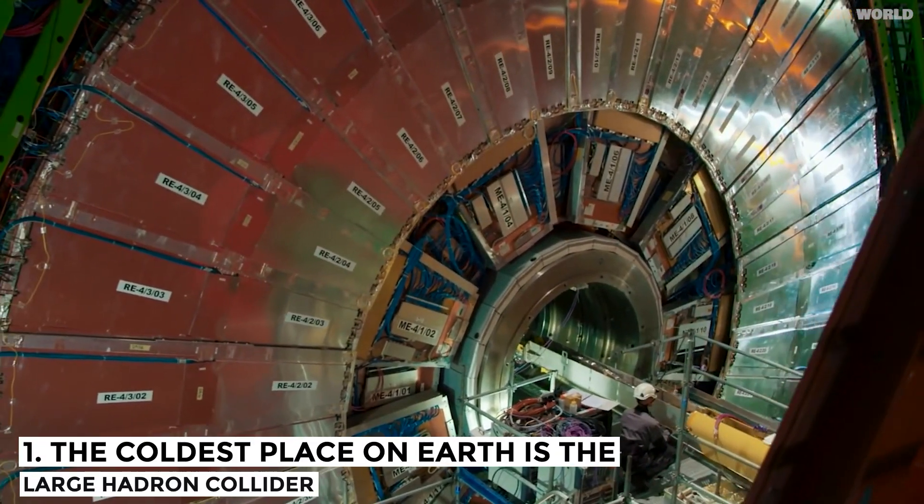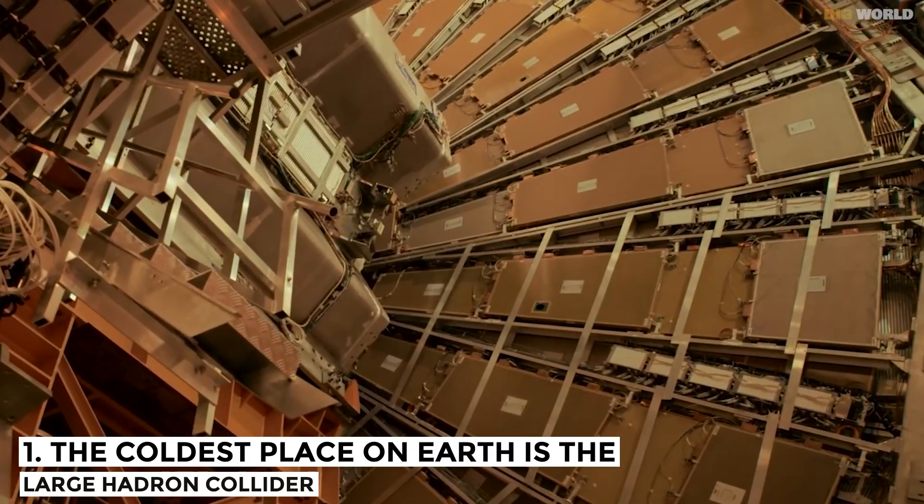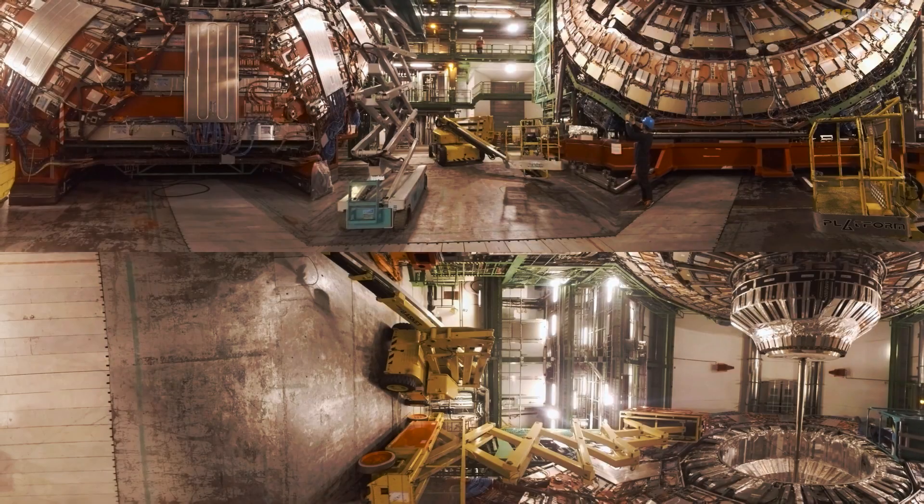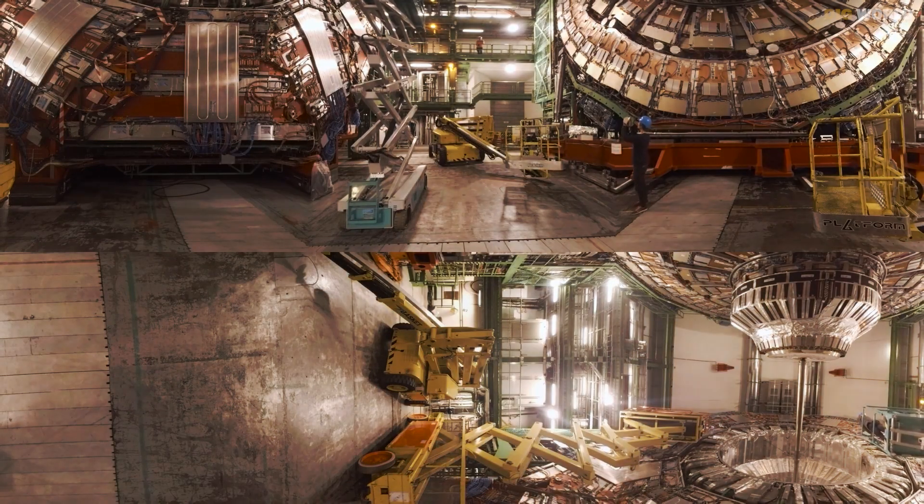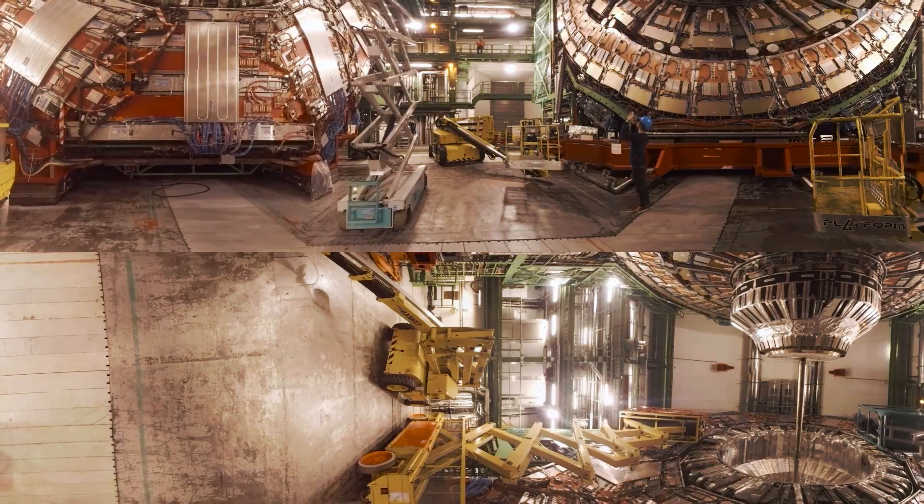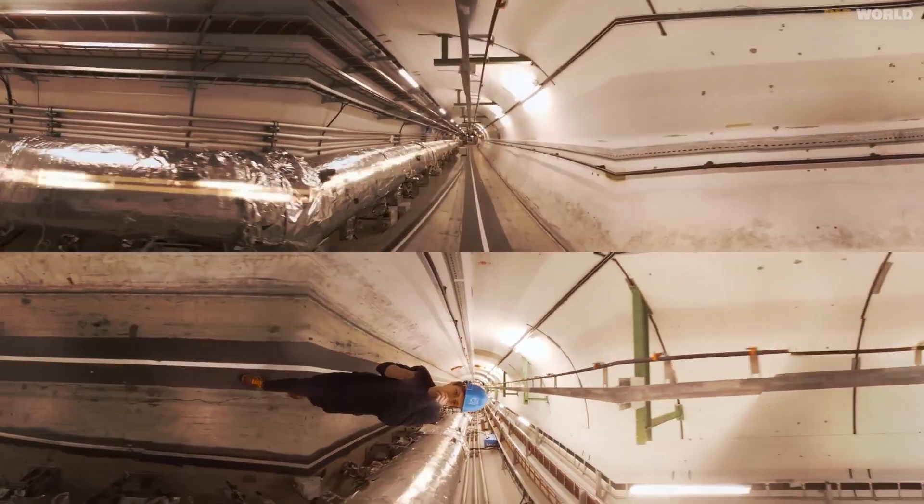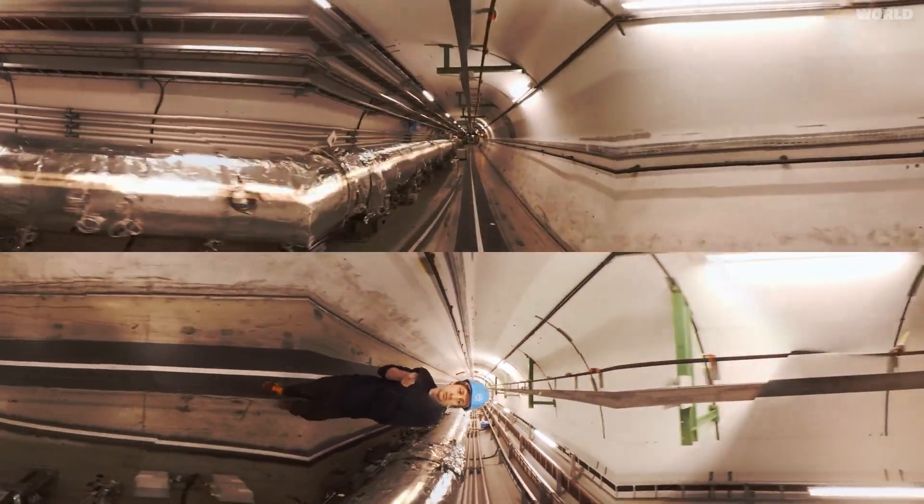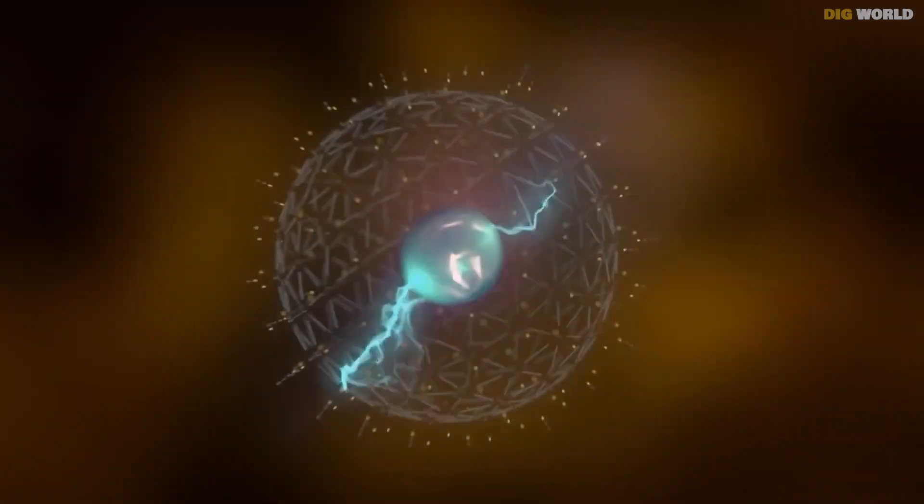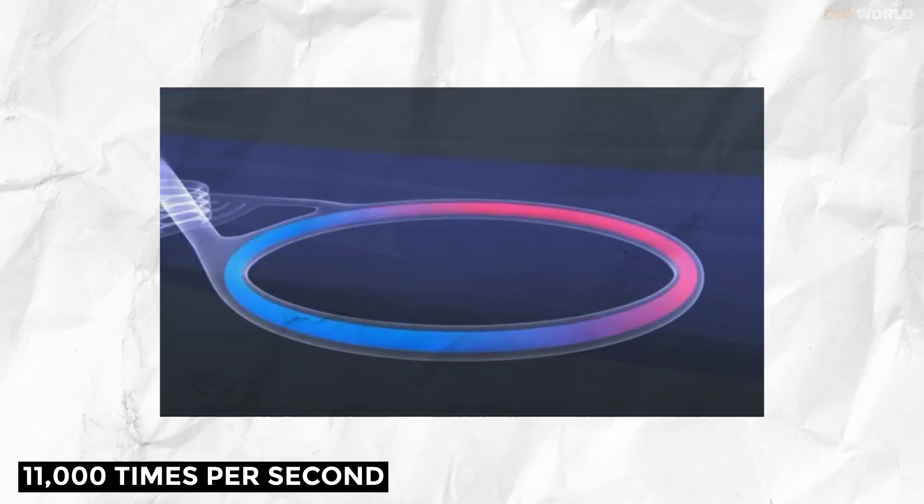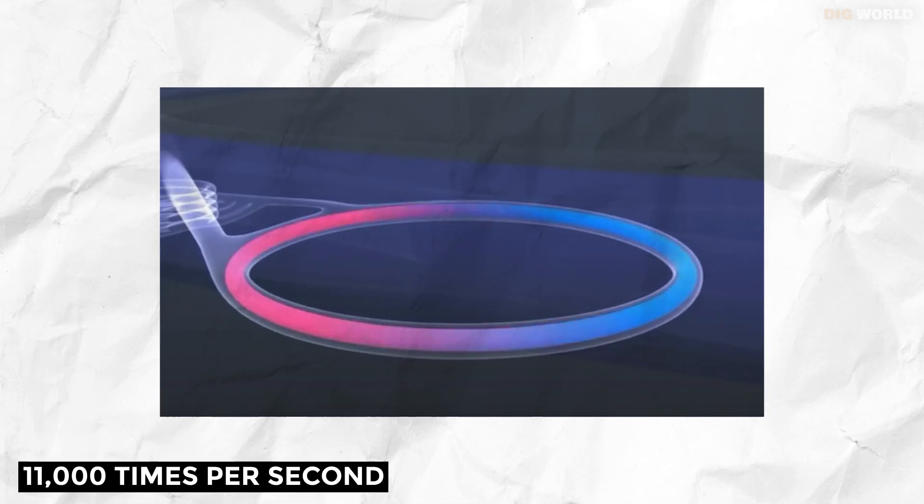Number 1. The coldest place on Earth is the Large Hadron Collider. It's 1.9K, which is close to absolute zero. A cryogenic cooling system maintains it this cold for the superconductor electromagnets, which send proton beams racing towards each other in a loop 100 meters below the Earth. If you were driving bursts of 200,000 billion protons around a 27-kilometer ring at a pace of 11,000 times per second, you'd need some help staying cool.